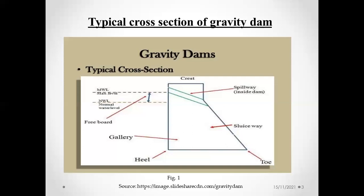Spillways are present in the dam. To drain out the water smoothly, spillways are used. Sometimes the water is discharged through the spillway by opening the gate. Whenever the reservoir is full during rain or in any condition where it is necessary to drain out the water, the spillway is used.